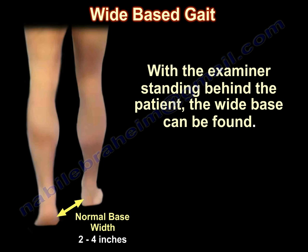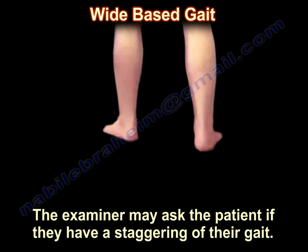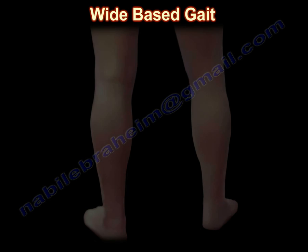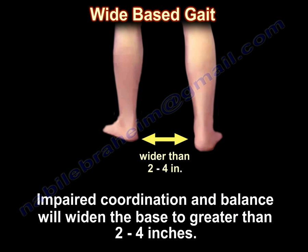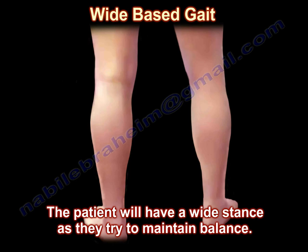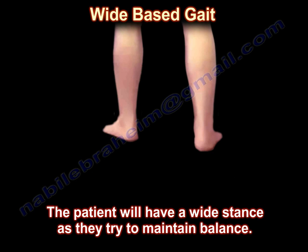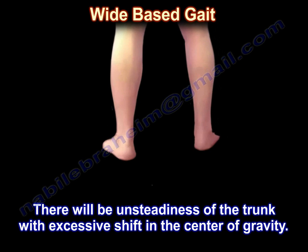With the examiner standing behind the patient, the wide base can be found. The examiner may ask the patient if they have a staggering of their gait. Impaired coordination and balance will widen the base to greater than 2 to 4 inches. The patient will have a wide stance as they try to maintain balance. There will be unsteadiness of the trunk with excessive shift in the center of gravity.